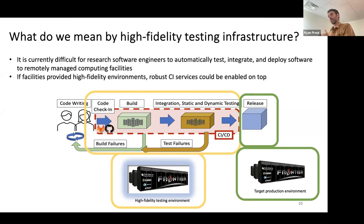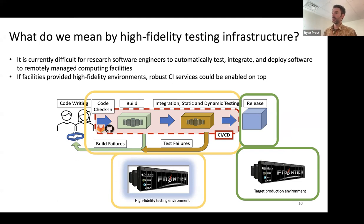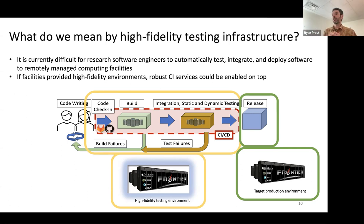A lot of the time you don't want to use production systems for testing or integration. The cycles are precious. But if facilities provided high-fidelity environments that were independent of the production system, then we can start to look at having these robust CI services where that high-fidelity environment is more plugged into the CI workflow. We can do fully automated CI workflows more tied to the upstream code base, and then deploy to the production environment. If we had environments like this, separate from production and provided in a more open space to developers targeting these systems, it would be very useful.